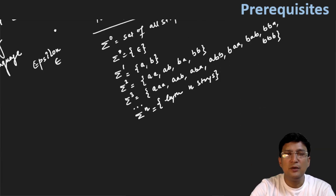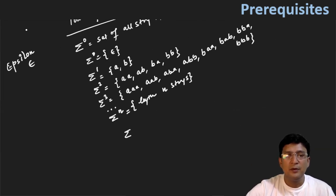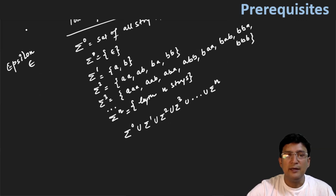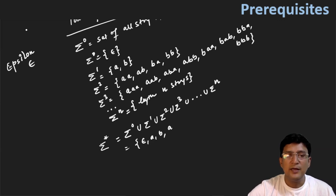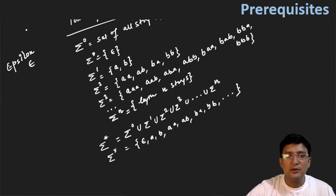Now, if I take the union of all these — sigma power zero union sigma power one union sigma power two union sigma power three, and so on — then this sigma star (union of all sigma power n) represents the set of all strings of any length over {a, b}. So this will be: epsilon, then a, b, then all two-length strings, then all three-length strings, and so on. So sigma star represents the set of all strings of any length over {a, b}.